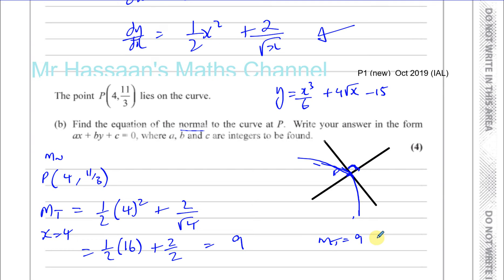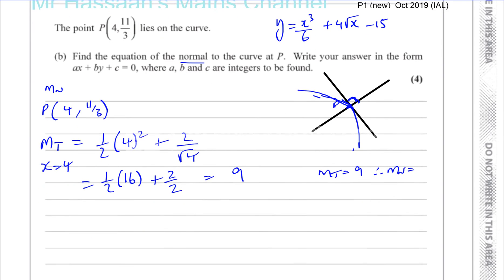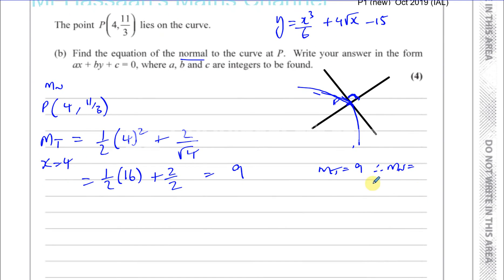Therefore, the gradient of the normal — the normal to the curve and the tangent are related by being negative reciprocals of each other. If the gradient of the tangent is 9, the gradient of the normal will be negative 1 over 9. You take the gradient of the tangent, change its sign, and turn it upside down. So the gradient of the normal to the curve is minus 1 over 9.